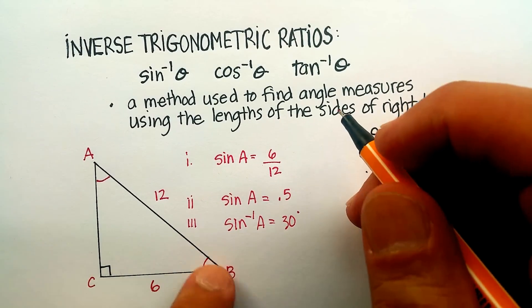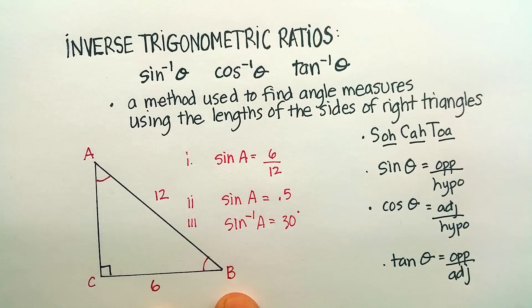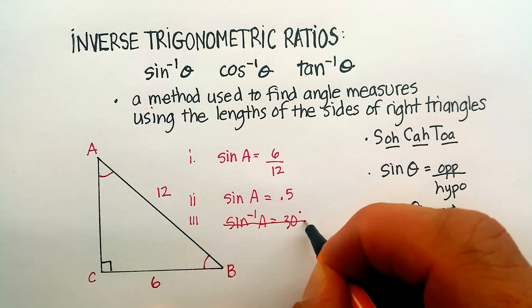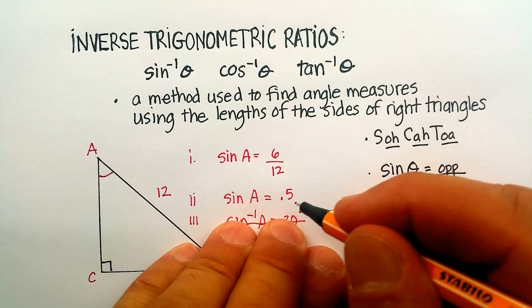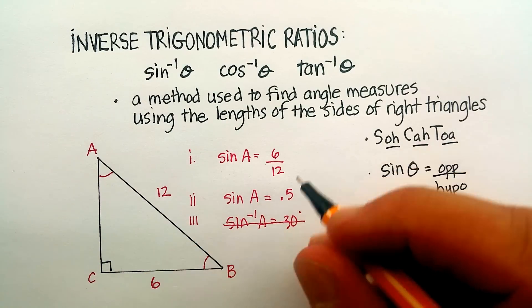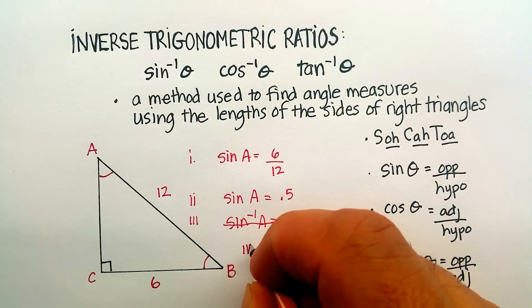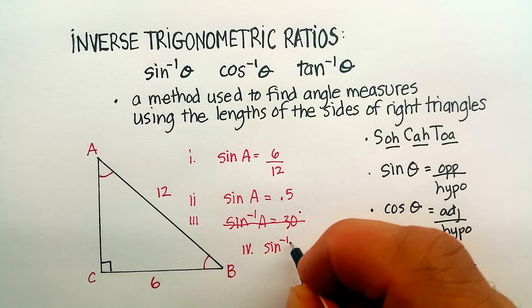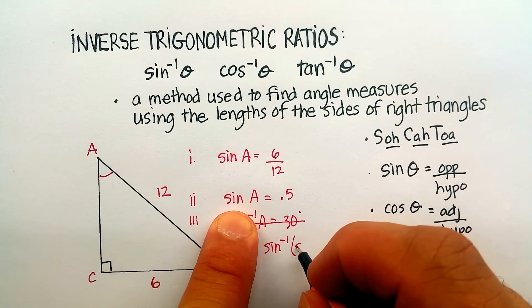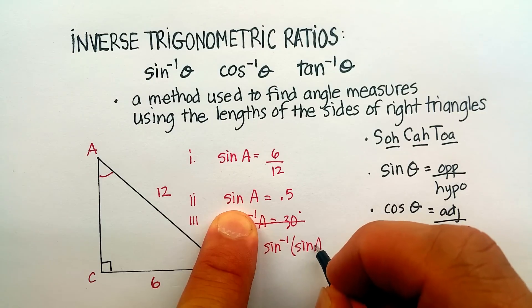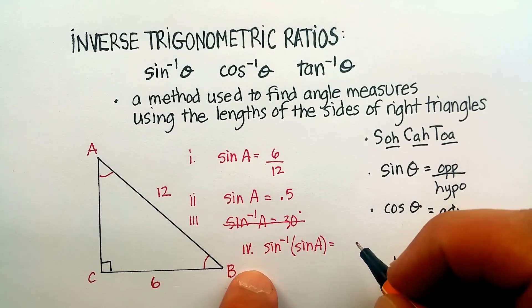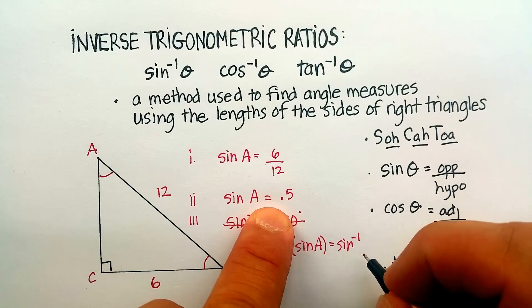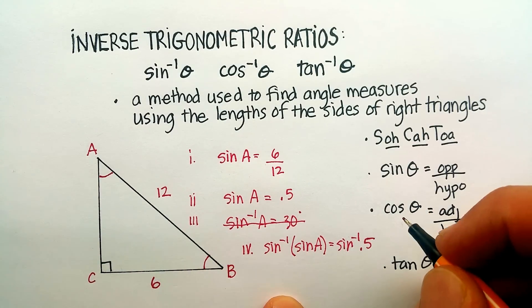You know what? Actually, let me redo this for just one second. If I really wanted to do this more correctly, I'm just going to cross this out. I'm going to multiply both sides by the inverse sine. Let me show you why.